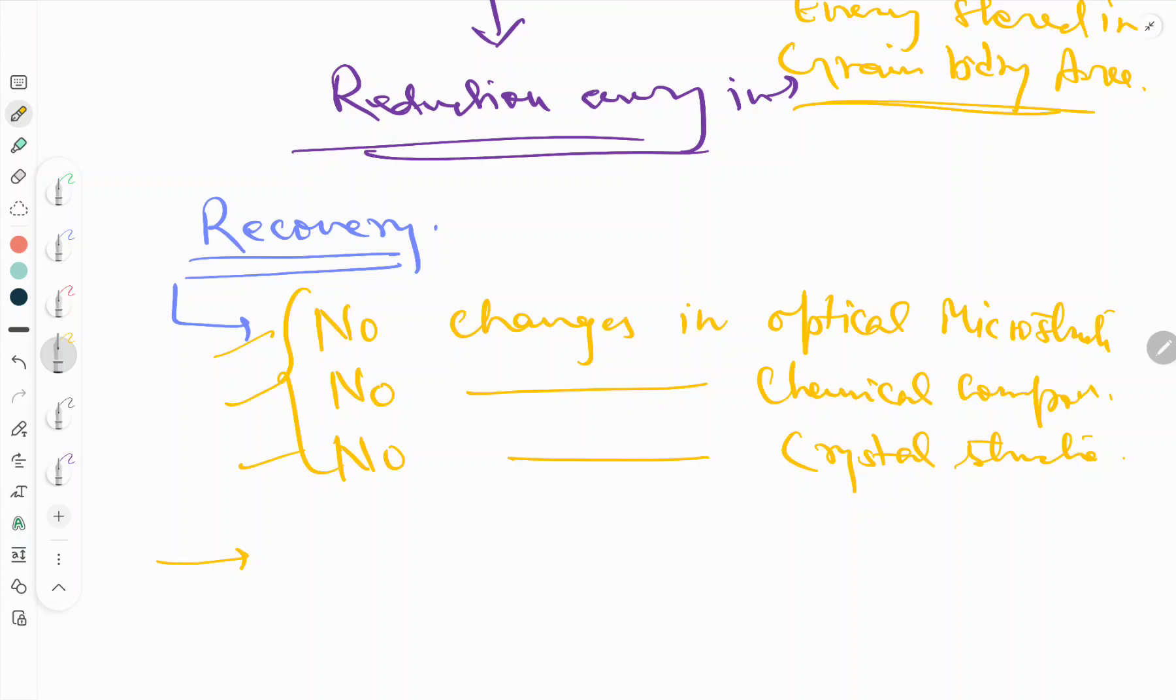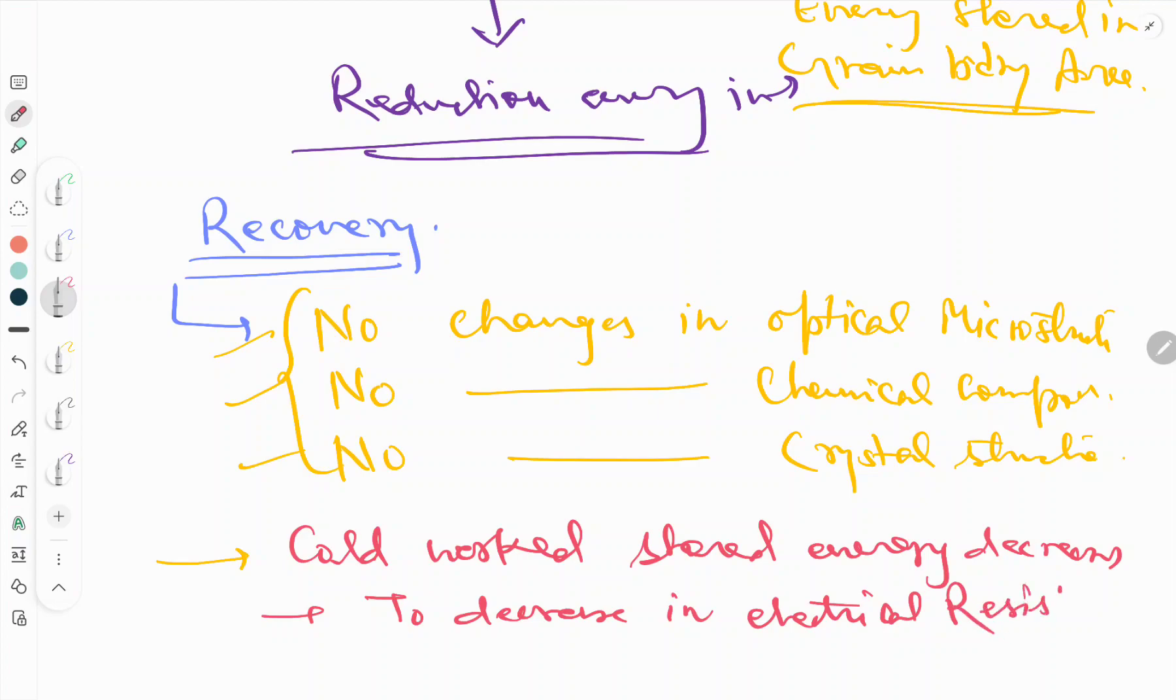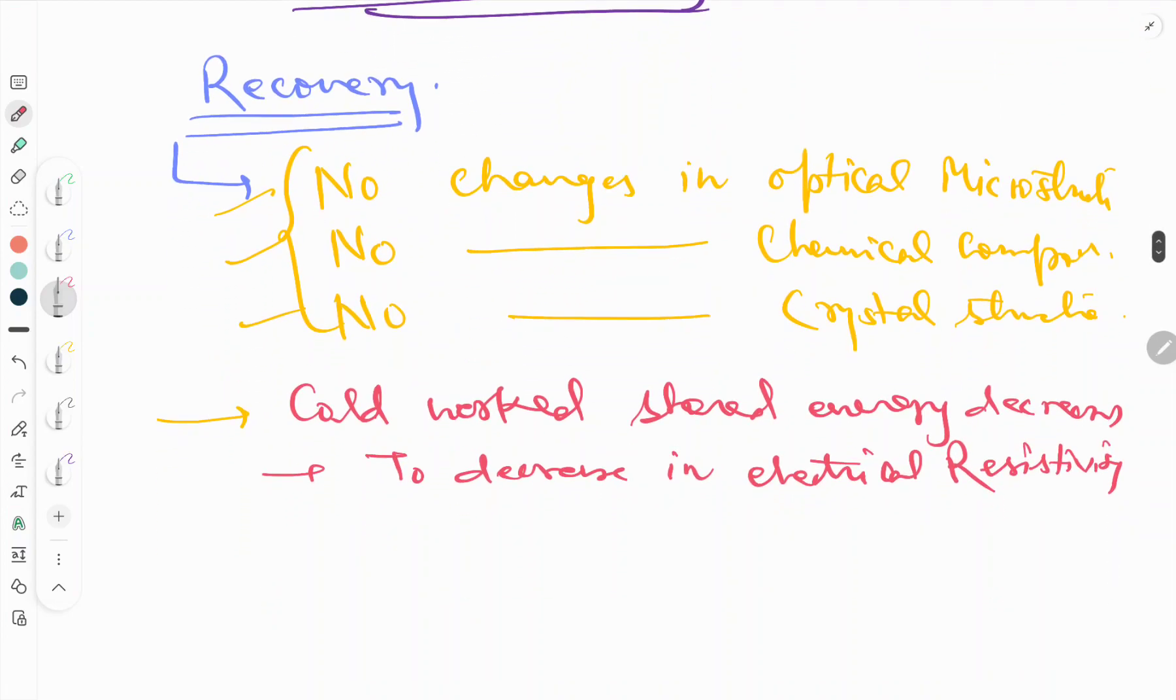Now we will see how the cold worked stored energy decreases. The cold worked stored energy decreases first due to decrease in electrical resistivity, and second due to decrease in properties such as hardness.